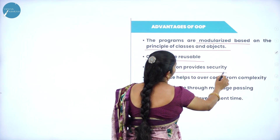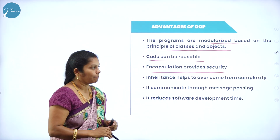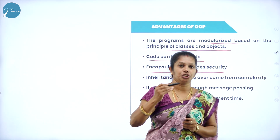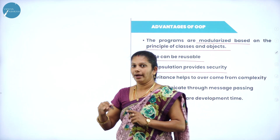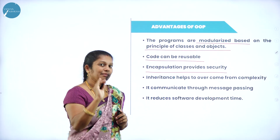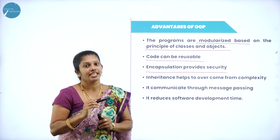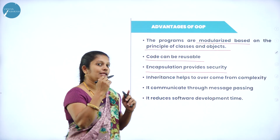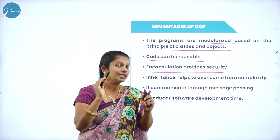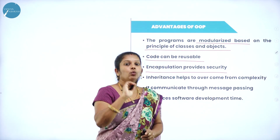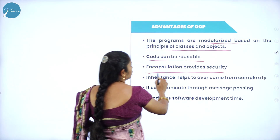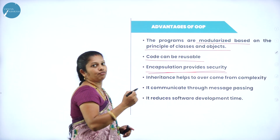Encapsulation provides security. Encapsulation is about combining data and functions into a single unit. In a mobile, data and functions are combined, and by that the data can be hidden and secured. If I want to pass the contacts from one mobile to another mobile, I cannot pass directly — it is hidden. With the help of a function only, I can pass. That is how encapsulation provides security for your data.